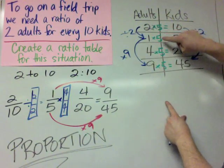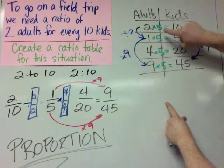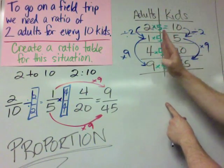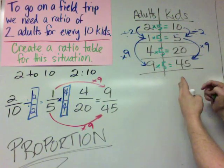It's not always a nice convenient number like 5. Sometimes it's a fraction or a decimal. But there is always going to be a horizontal relationship between the left column and the right column.